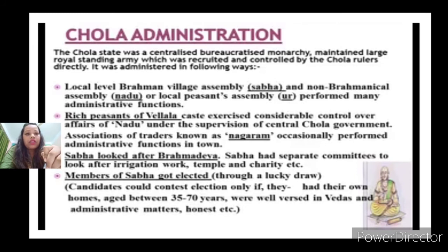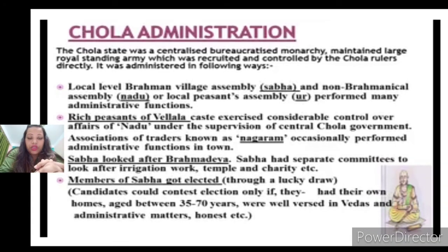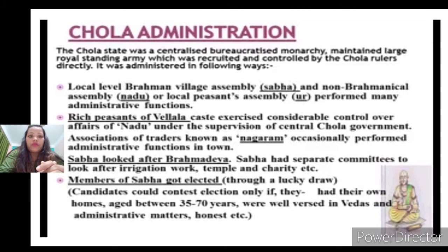One assembly was Brahmanical, known as 'Sabha,' and the other was non-Brahmanical, known as 'Naru' or the local peasant assembly. Among the peasants there were also rich, high-caste peasants known as 'Velala.' This caste exercised considerable control over the affairs of Naru under the supervision of the central Chola government. So Velala oversaw Naru, which in turn oversaw Ur. There was also an association of traders known as 'Nagaram,' which occasionally performed administrative functions in towns.